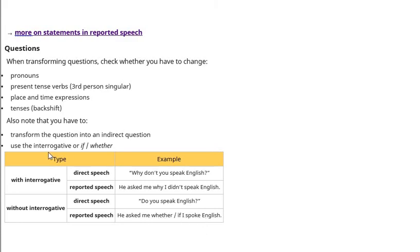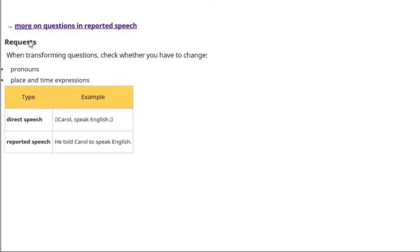Ab yeh dhekhaein — yhaan pe khaan hai ki interrogative mein if or whether use kerna hai. To without interrogative hai, is mein if or whether use hua hai. More on questions in reported speech.